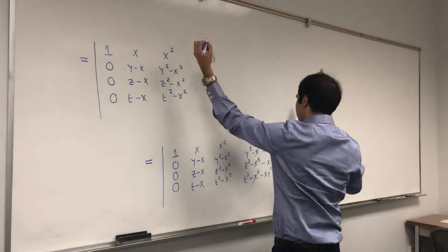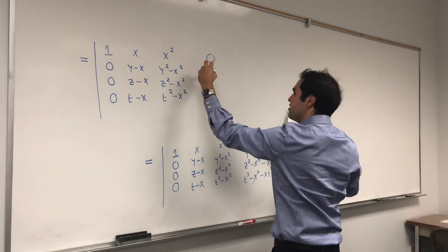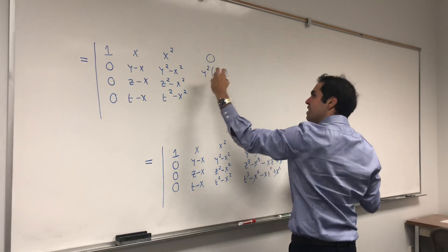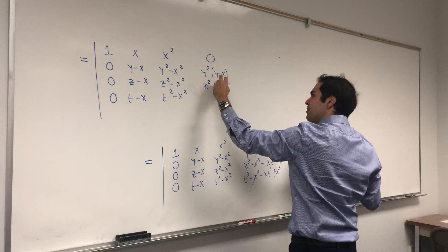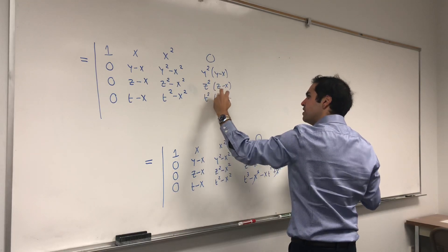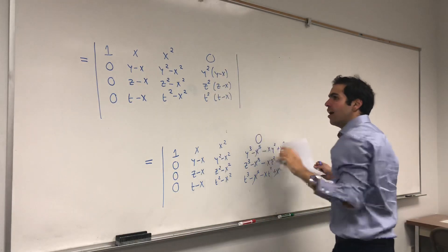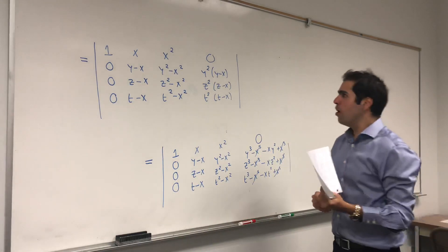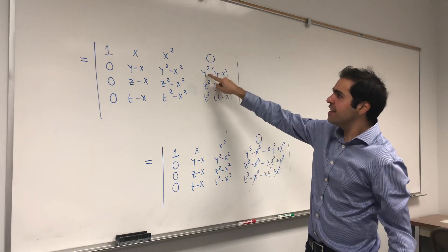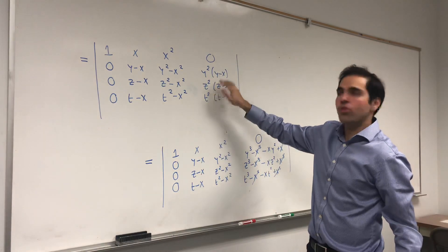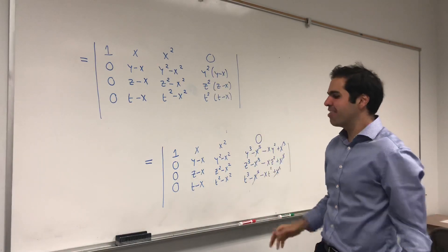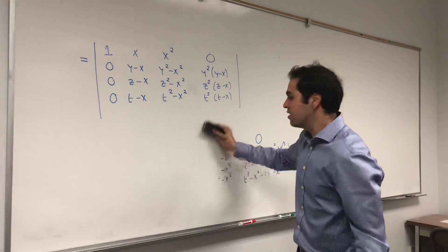In the last row we have a common factor: y²(y−x), z²(z−x), and t²(t−x). Notice that if we can factor out y−x, z−x, and t−x from each respective column, the remaining entries become y², z², t², which is the third row of a 3×3 Vandermonde matrix. This shows we are on the right track.